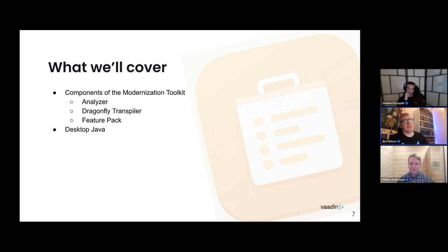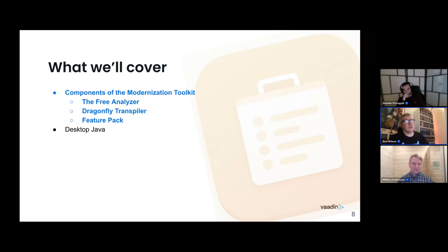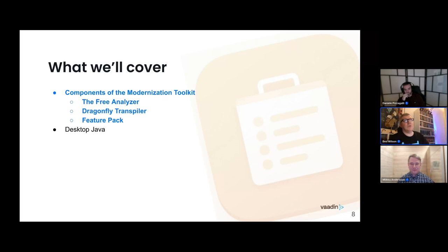The second half of today's webinar will focus on the desktop elements, covered by my colleague Daniele. The Modernization Toolkit is a product that requires a Vaadin subscription. It has three components: the first is an Analyzer, which you run before beginning your modernization project; the second is Dragonfly, the tool that does automated refactoring of your sources; and the third is the Feature Pack, which extends the target Vaadin Flow features with features from the original libraries you're migrating from.